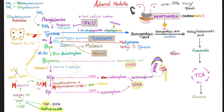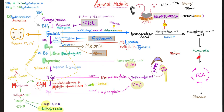Tyrosine has options. It can become thyroxine in the thyroid gland. It can become melanin in the melanocytes of your skin. It can become dopa in the nerve fibers and the adrenal medulla. Or it can become homogentisic acid through many steps. There is an enzyme here — 4-hydroxyphenylpyruvate dehydrogenase — and there is an especially important enzyme: homogentisic acid oxidase, which oxidizes homogentisic acid into maleylacetoacetic acid, giving acetoacetate and fumarate. Fumarate can feed into the TCA cycle to give energy.